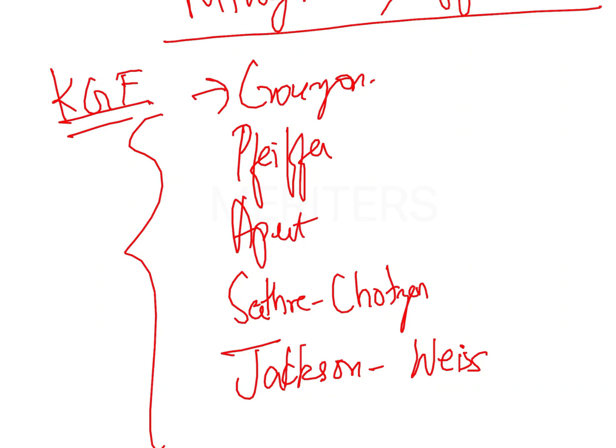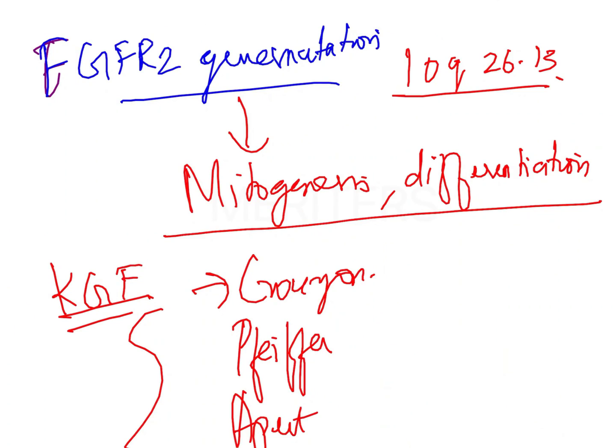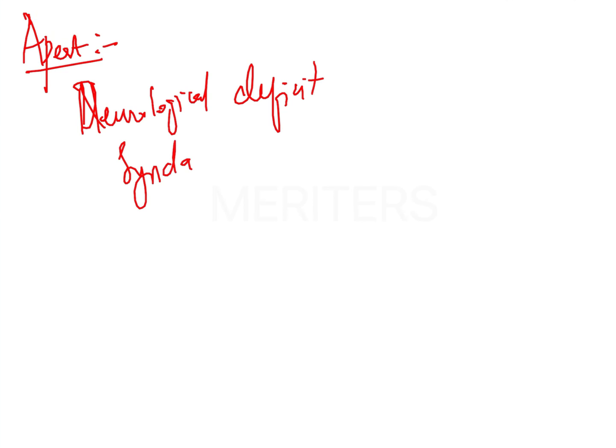In radiography, you will see a cloverleaf skull, which is very important. Now, how do you differentiate from other options like Apert and Carpenter? Apert has similar clinical features like brachycephaly, hypertelorism, and proptosis, with common radiographic features like impacted teeth and ectopic eruptions. Apert is distinguished from Crouzon when a patient presents with neurological deficits, syndactyly, and fusion of cervical vertebra.